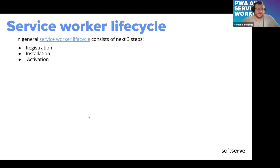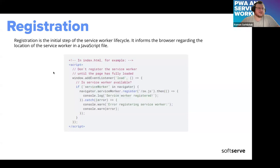The service worker lifecycle has three steps: registration, installation, and activation. Registration is the initial step — it informs the browser about the location of the service worker JavaScript file. In a basic example, you listen to the load event, check if the browser supports service worker functionality, and if so, register the service worker.